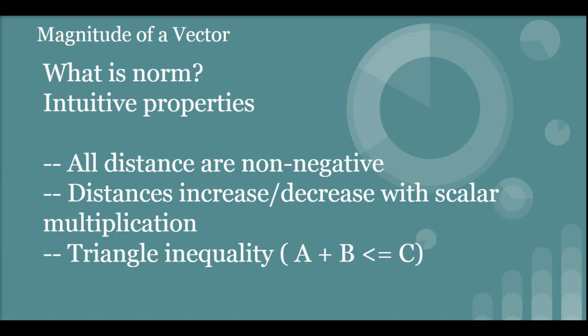First of all, the second property is distances increase or decrease with scalar multiplication. So if we say we travel from A to B, which was say five kilometers or five miles, and if we have to travel 10 times of that, then it becomes 50 kilometers or 50 miles, right? With our example, and the third property is called triangle inequality.